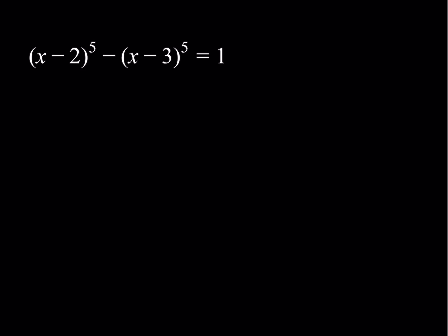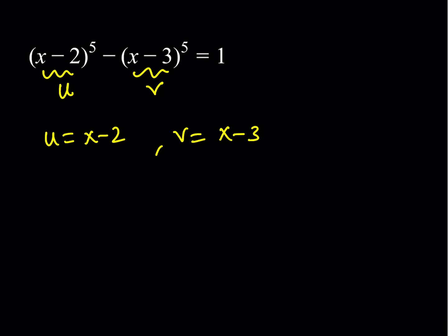So what I'm going to do here is make some substitutions. First of all, I would like to call this u and I'd like to call this v. That gives me that u is equal to x minus 2 and v is equal to x minus 3. Now, you might say we already know x minus 3 because it's just u minus 1.